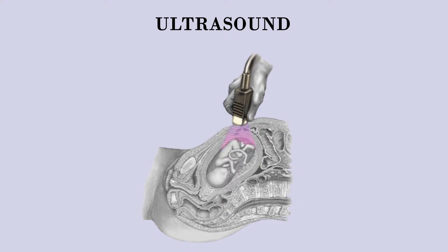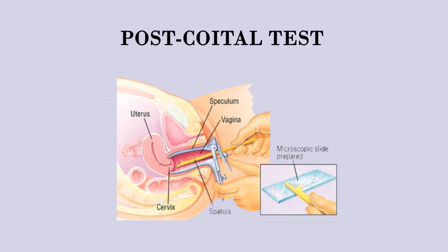An ultrasound is used to look for fibroids and cysts in the uterus and ovaries. This test uses sound waves to picture the uterus and ovaries, causes little discomfort, and is very effective.